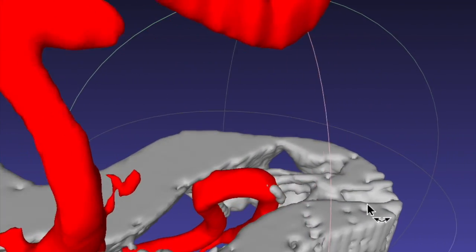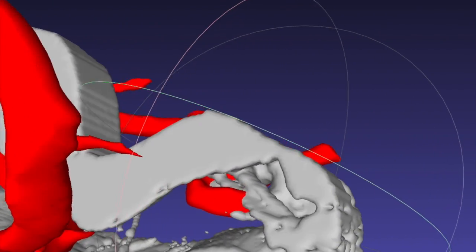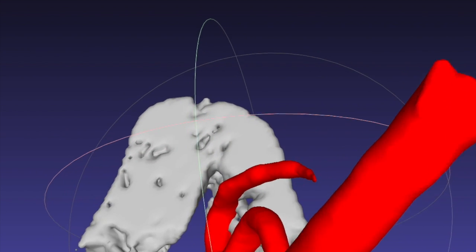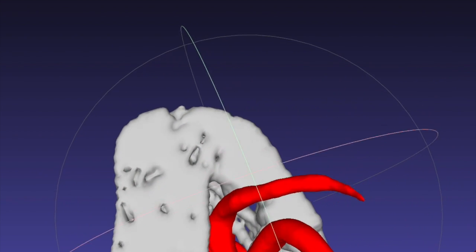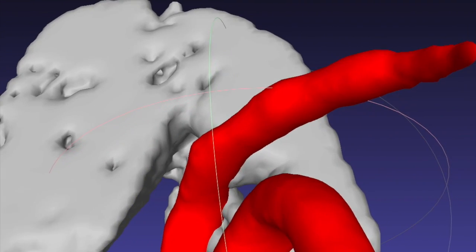The last case exemplifies a pitfall of hemifacial spasm microvascular decompression. That is, the nerve in this case is compressed, but so is the attached segment of the facial nerve. Simple decompression of the nerve without brainstem decompression may not result in durable improvement.